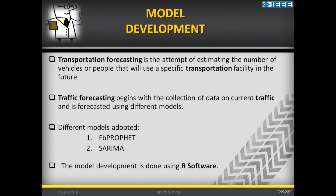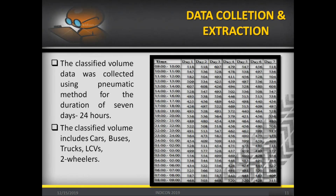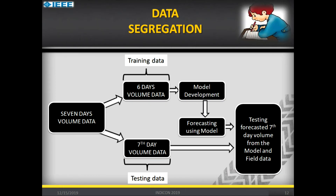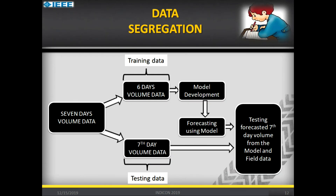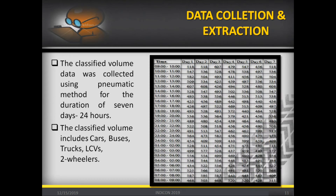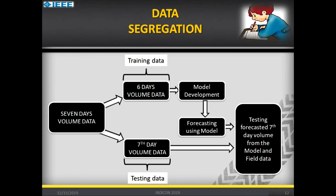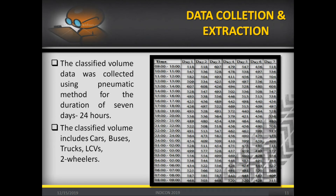These two models are coded in R software, which is open source. This is the tabular form of the data collected using the pneumatic tube method for 24 hours over a period of one week. It includes the number of vehicles such as cars, buses, trucks, LCVs, two-wheelers, and so on. The 7-day data is segregated into two components: the training dataset (first 6 days) and the testing dataset (7th day). We split the data to validate the model developed from the training set.